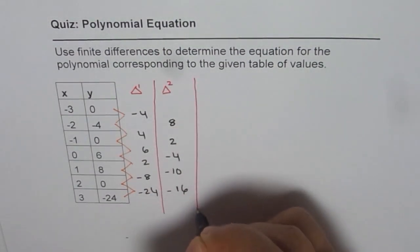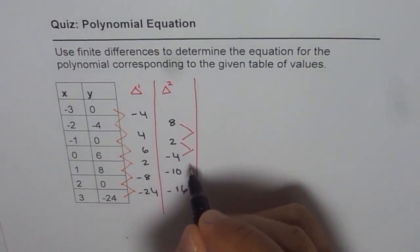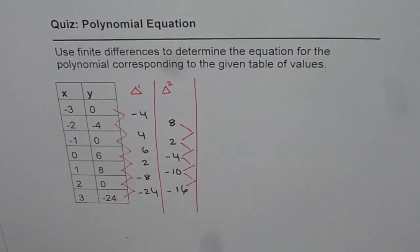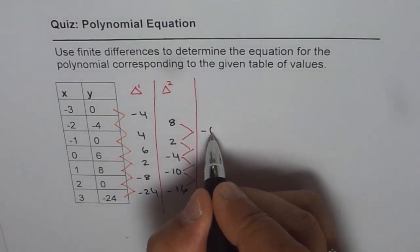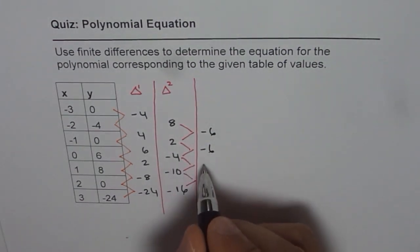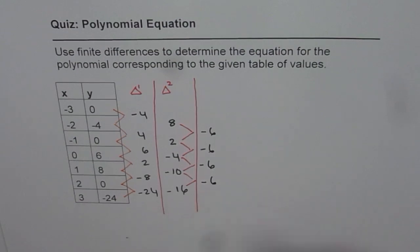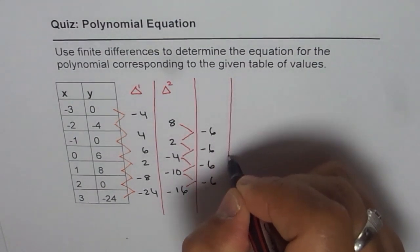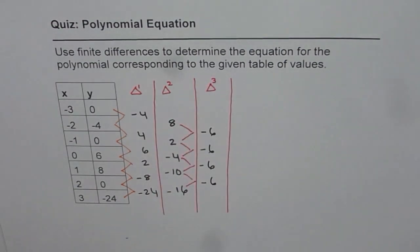Let's find the third finite difference. We do 2 minus 8 to get minus 6, minus 4 minus 2 is minus 6, minus 10 minus minus 4 is also minus 6, and minus 16 minus minus 10 is minus 6. So the third finite difference is constant at minus 6.